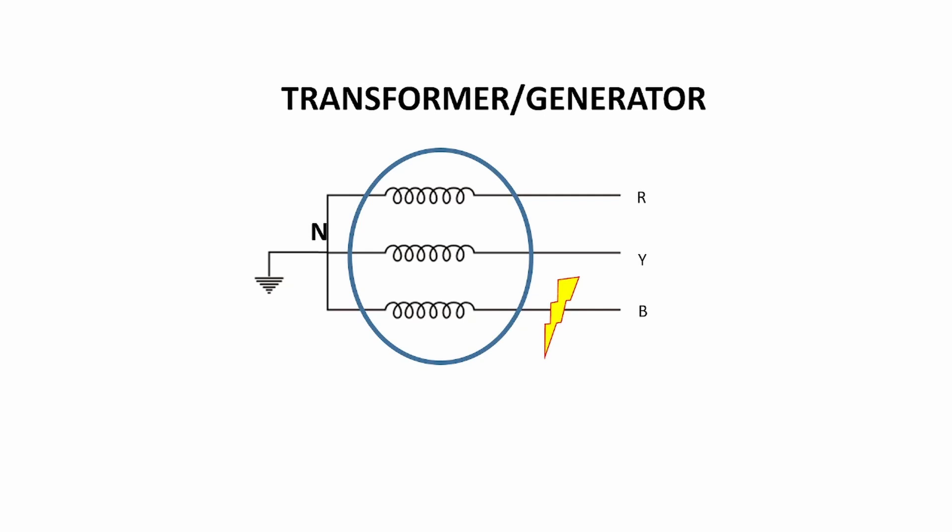the fault current will flow from the fault point to neutral grounding point and enter into the equipment. The amount of fault current is very high, so that current can damage the equipment winding or core. As you can clearly see in this practical picture,